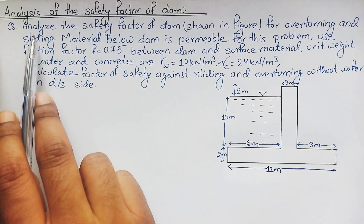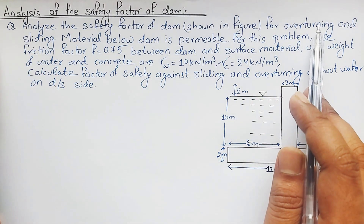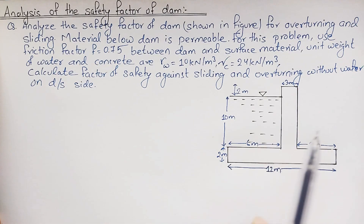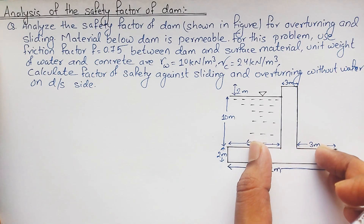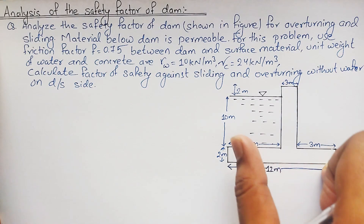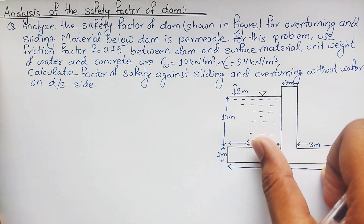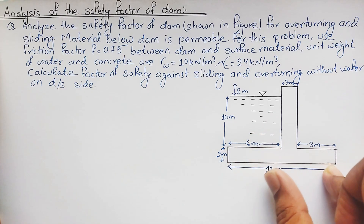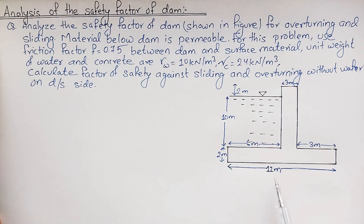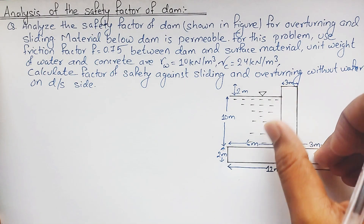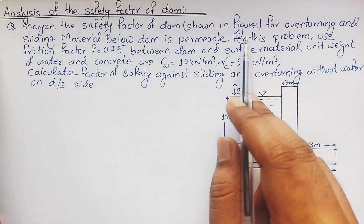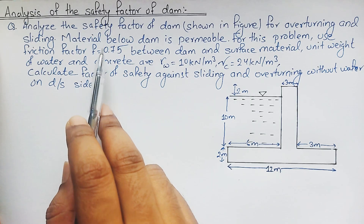We are asked to analyze the safety factor of the dam for overturning and sliding conditions. There are two conditions in which the dam could fail: the sliding condition, where the dam is displaced from its original position, and the overturning condition, where hydraulic pressure or uplift pressure exerted by seeping water can overturn the dam upside down.